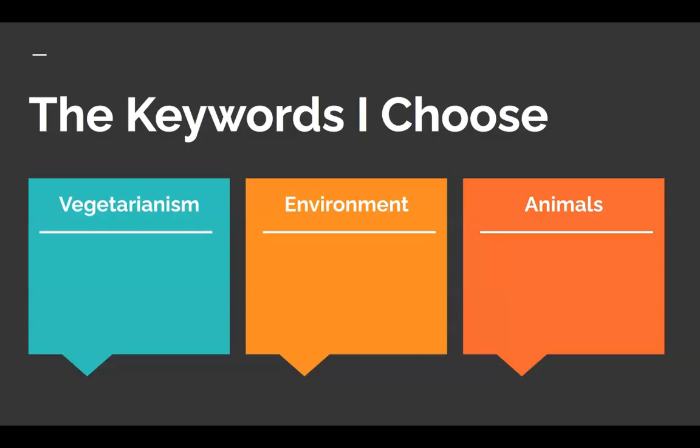Now we have our main keywords that we can use to search. We can search them individually, but we can also get more tailored, specific results by searching them together using the word 'and.' For example, we can look up vegetarianism, but we'll get better results if we look up 'vegetarianism and the environment.' So our three main keywords are listed here.